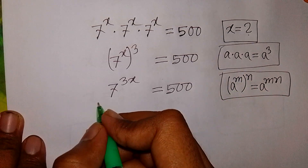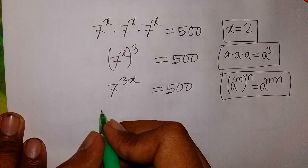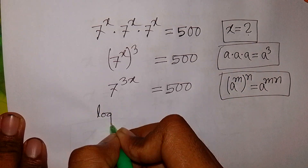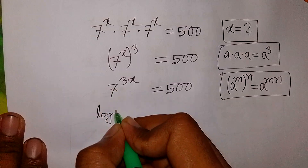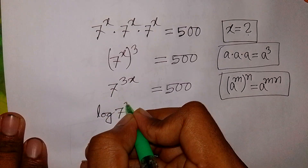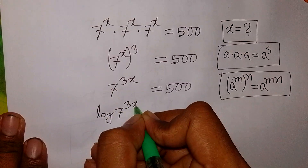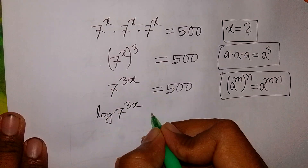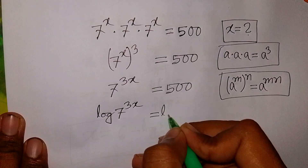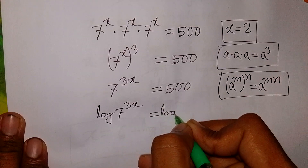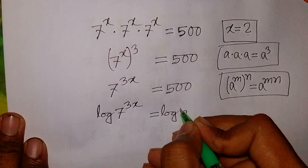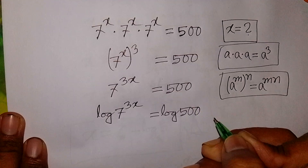Now we apply log on both sides. So log of 7 power 3x is equal to log of 500.